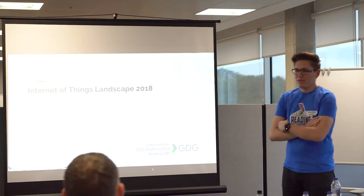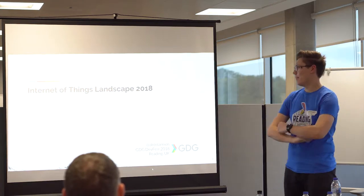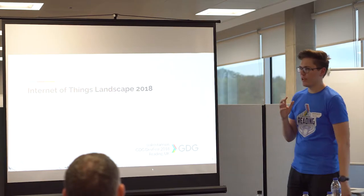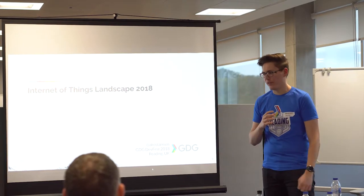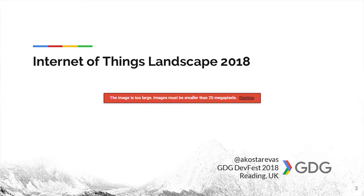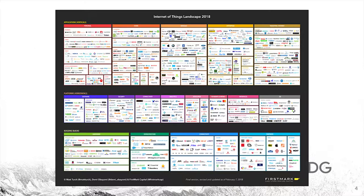Whenever I introduce people to the Internet of Things, I always try to show them this landscape — a very big picture that pretty much summarizes all of IoT. Unfortunately I can't do that in Google Slides; it's way too big, more than 25 megapixels. But I managed to compress it down. The actual image has three layers: applications, which is all the companies focused on applying IoT.